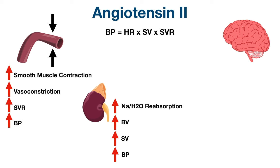Angiotensin 2 can also stimulate the release of aldosterone from the adrenal cortex. Aldosterone is a hormone that acts on the distal tubule of the nephron to increase sodium and water reabsorption, which similarly increases blood volume, stroke volume, and blood pressure. Aldosterone also increases potassium excretion in the urine — this will become important when we discuss the side effects and contraindications of ACE inhibitors.